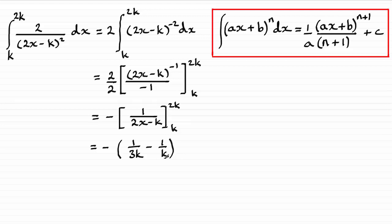What we've got here really is a third minus a whole one of 1 over k. And that's just going to give me minus 2 thirds. So you've got negative of negative 2 over 3k. And obviously this gives us a positive value, 2 over 3k.